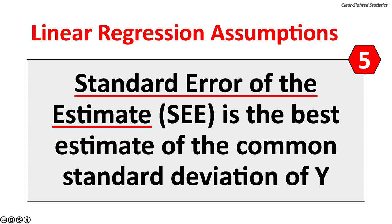There are five key assumptions for linear regression. First, for each independent variable X there is a dependent variable Y. Second, the value of the dependent variable Y is independent of the value of X. Third, the dependent variable Y is normally distributed. Fourth, the mean of the Y variables is on the regression line. Fifth, the standard error of the estimate (SEE) is the best estimate of a common standard deviation of Y. The least squares line is the best-fit line that minimizes deviations, or the sum of squared errors.